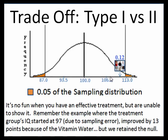Let's consider our previous example where we had a treatment that was effective — it increased people's IQ by 13 points. However, due to sampling error, our group started off with an average IQ of 97. So they start off at 97, plus 13, gets them to an IQ of 110. But with only 6 people, you could end up with an average IQ of 110 just due to chance — just due to sampling error — 12% of the time. So even though our treatment was effective and considerably effective, increasing IQ by 13 points, we were not able to demonstrate it.